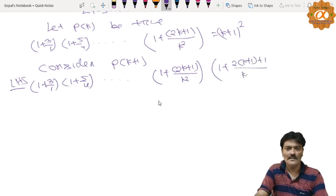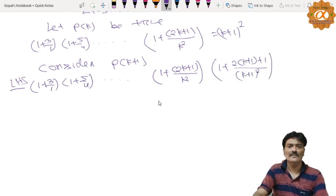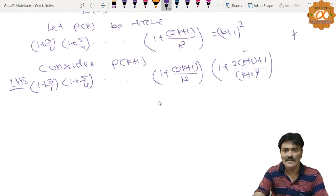Okay, this is k plus 1 term. Now requirement kya ho gaya - requirement is (k+2) whole square.